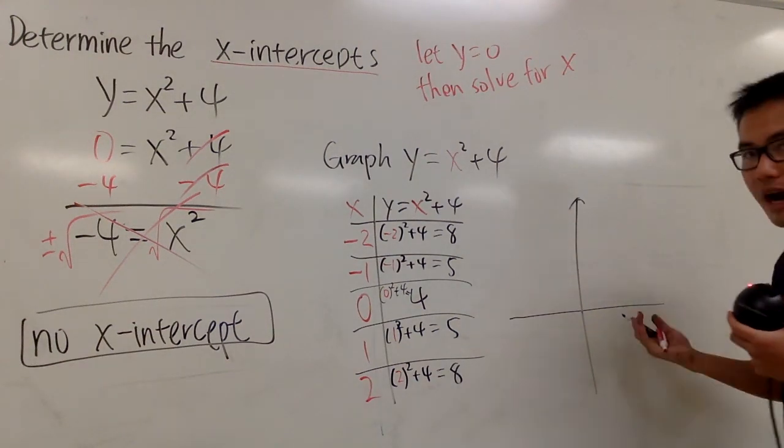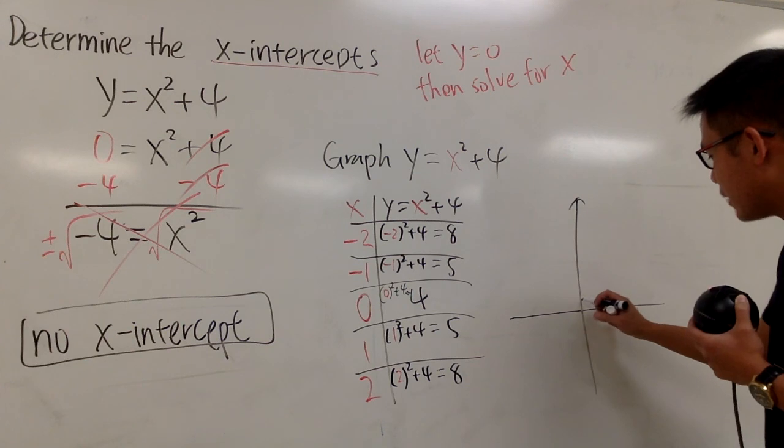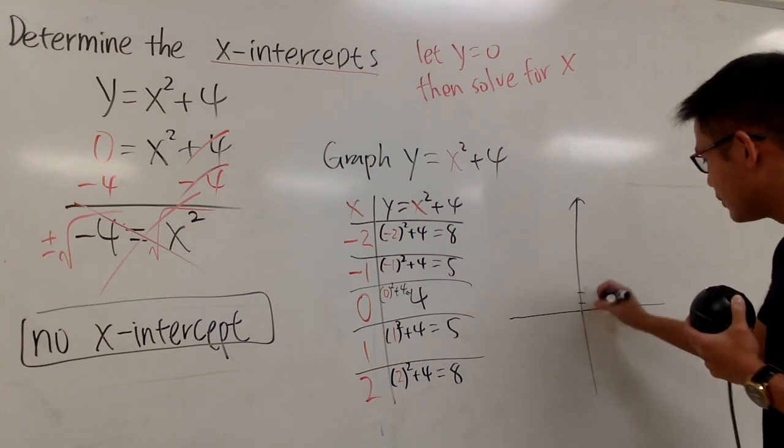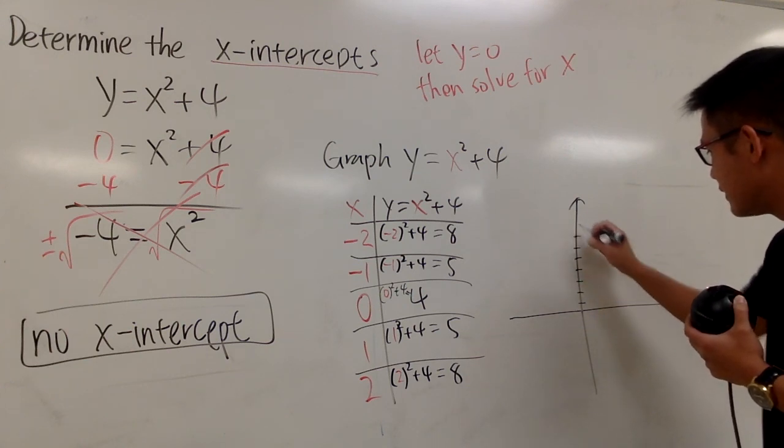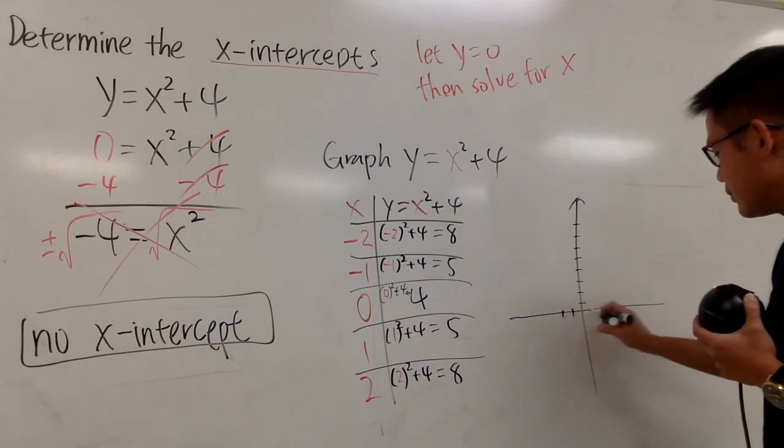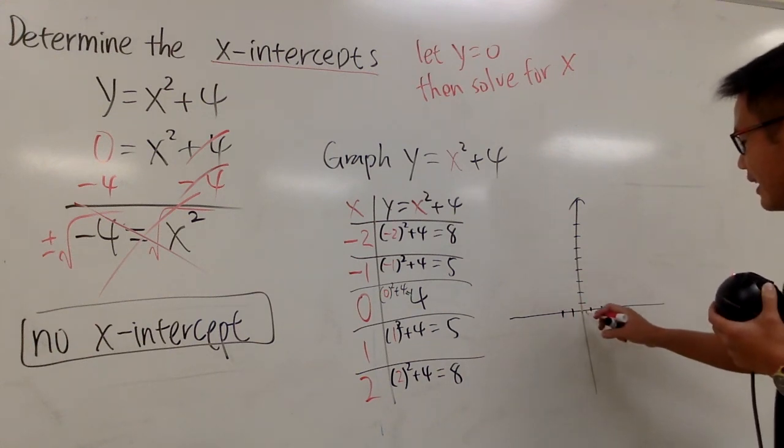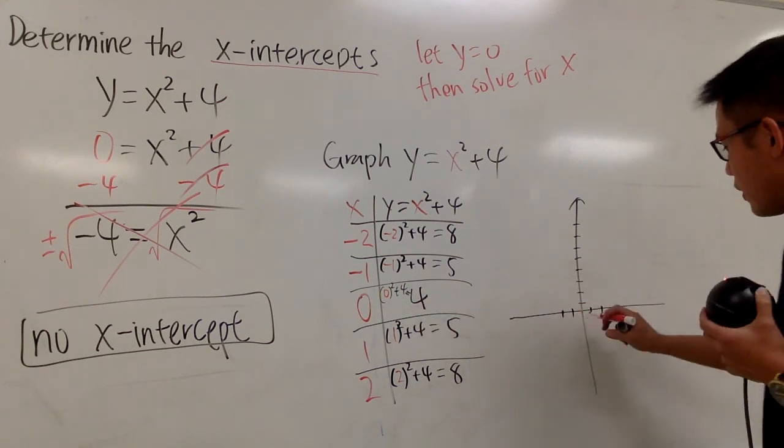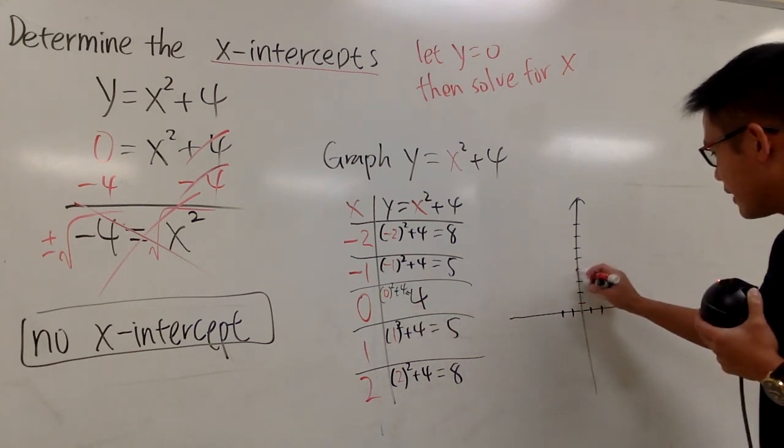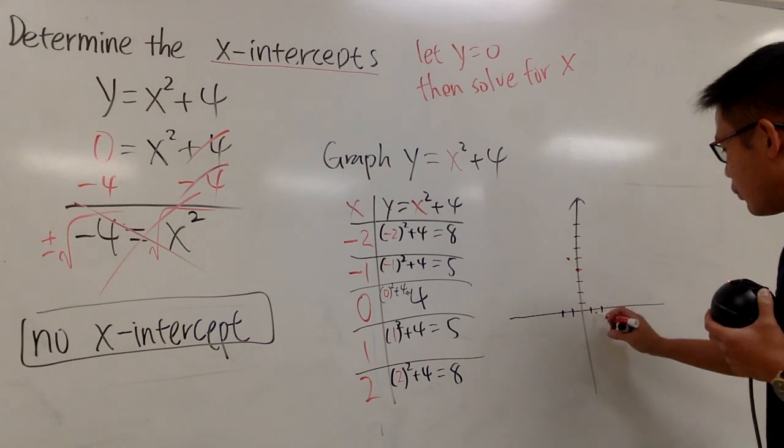As you can see from the graph, we have the y-axis marked 1, 2, 3, 4, 5, 6, 7, 8, and the x-axis with -2, -1, 0, 1, 2. The first point (0, 4) is here. Then (-1, 5) and (1, 5).